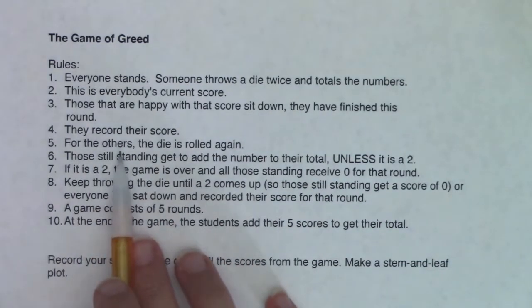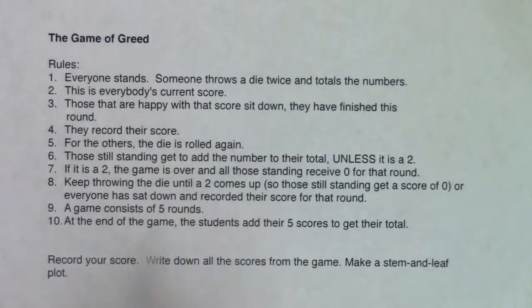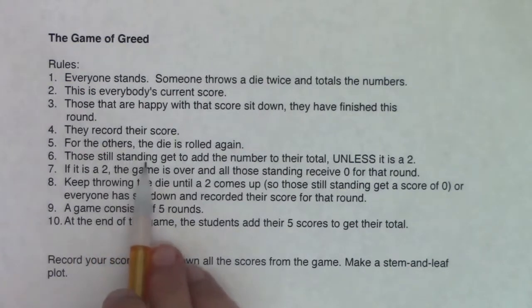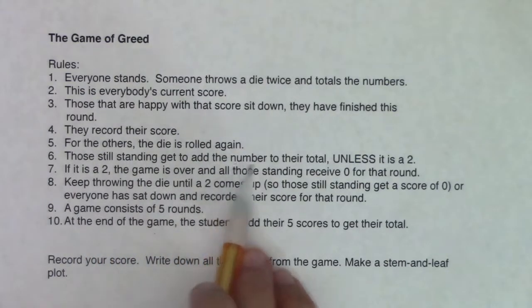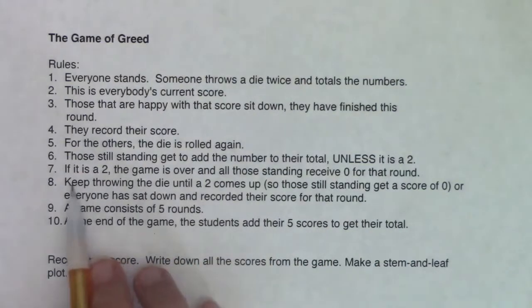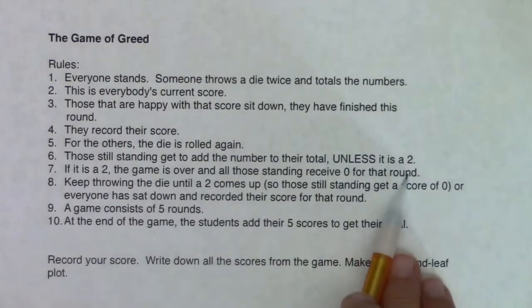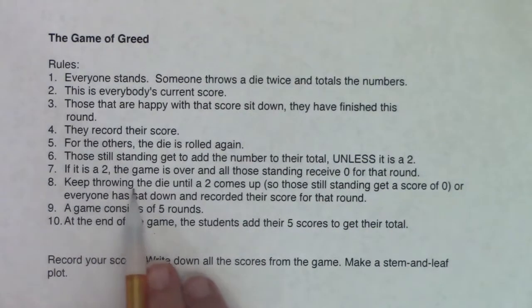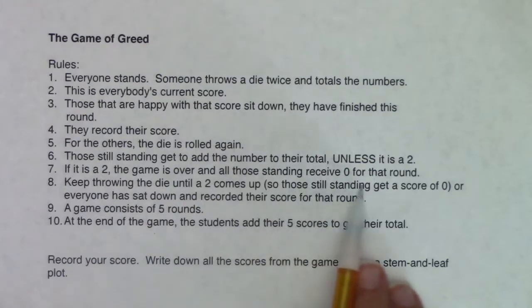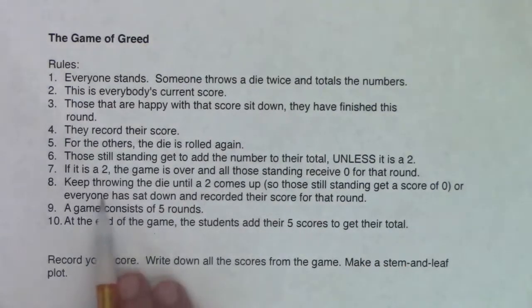For anybody else who is still greedy, and again, this is called the game of greed, I will roll the die again. So for those that are still standing, they get to add this new number to my total unless it's a two. If it is a two, the game is over and those who are left standing will receive a zero for that round. I will keep throwing a die until two comes up. So those standing will get that score of zero or until everybody has sat down and recorded their score for that round. We're going to go five rounds. And at the end of the game, the students will add their five scores up to get their total.